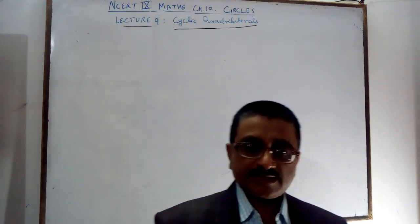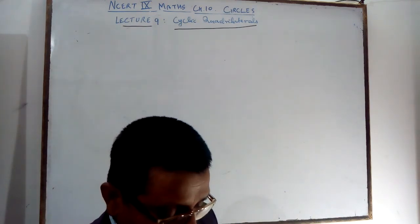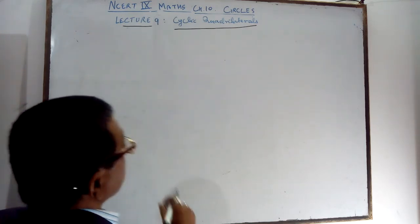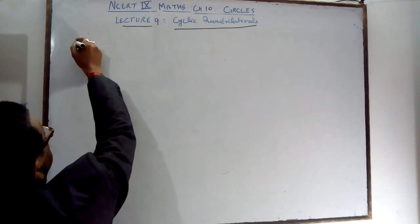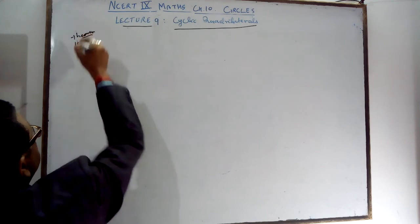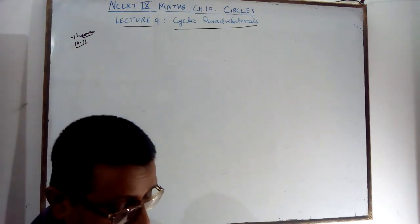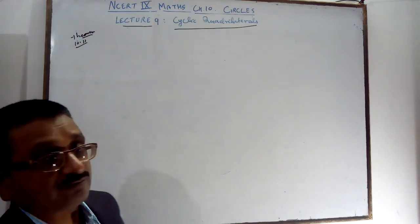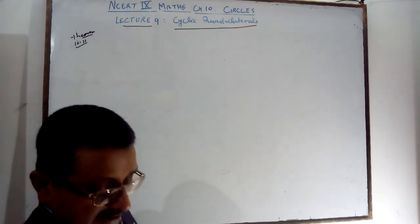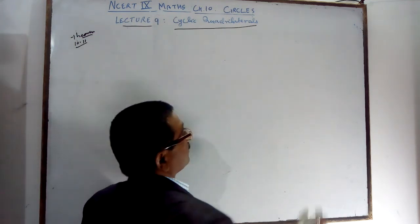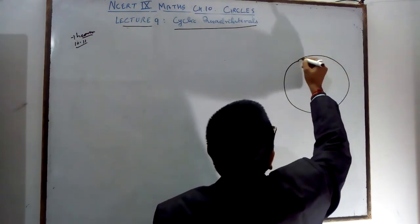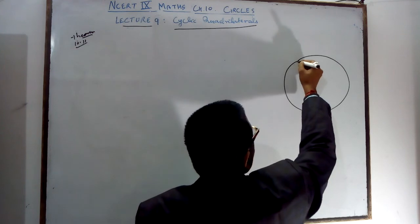It is called a Cyclic Quadrilateral. Theorem 10.11: The sum of either pair of opposite angles of a Cyclic Quadrilateral is supplementary. Supplementary means the sum is 180 degrees.